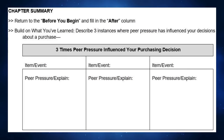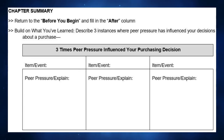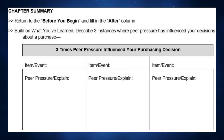Chapter summary: return to the first page with the before-you-begin section and fill in the after column — you may change some answers if you've learned a thing or two. Build on what you've learned: describe three instances where peer pressure has influenced your decisions about a purchase. Write down the item or event you bought and explain the peer pressure and other feelings associated with that purchase.